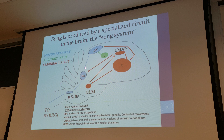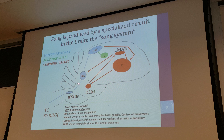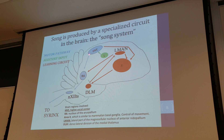We have the blue pathway — the motor pathway, or production pathway — that's the one that actually makes the song. The HVC, or Higher Vocal Center, is the one that initiates the song. It sends information to the nucleus RA, which then tells the neurons activating the syrinx — the voice box of the bird — to move in a certain way so that the song can actually be generated. Air has to move in a certain way, and we have to change the vibrating areas to change the pitch of the sound. That's all regulated through this blue motor pathway.